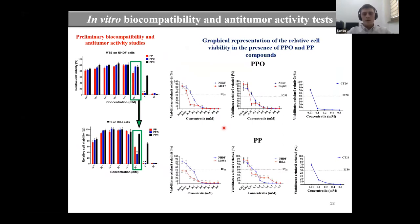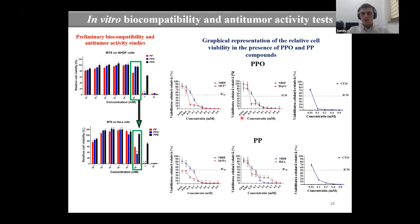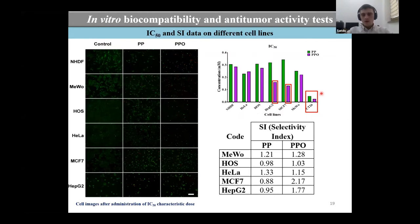The biocompatibility of these compounds was also investigated on fibroblasts. All three compounds are biocompatible up to 0.1 millimolar. We also investigated their cytotoxicity on HeLa cells and observed that at 0.1 millimolar, where they were biocompatible, we have a cytotoxic effect for compounds PP and PPO. That's why we tested them on a large spectrum of cancer cells, and the best results were obtained for compound PP on hepatic and breast cancer cells. These two compounds were also tested on colon cancer cell lines from mice, and the result was 10 times better than for human cancer cells.